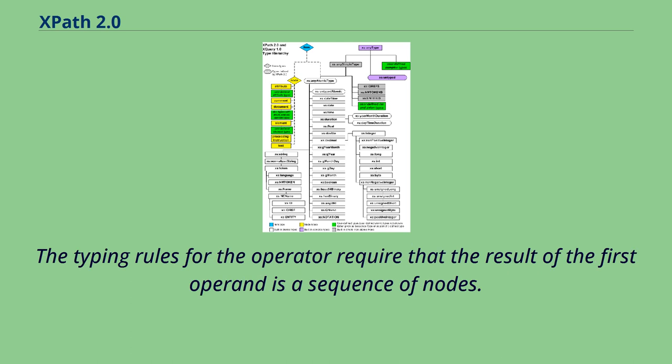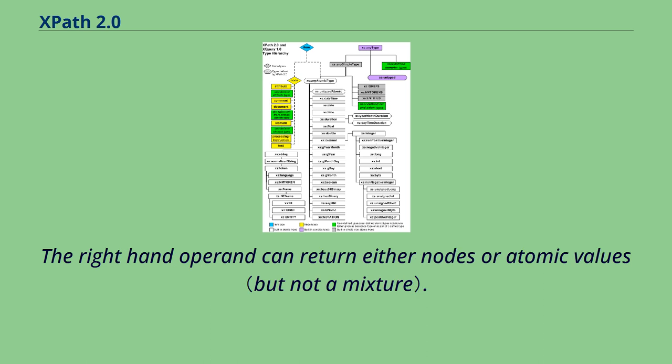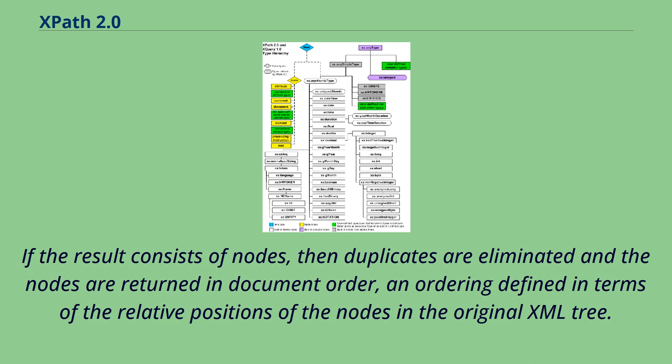The typing rules for the slash operator require that the result of the first operand is a sequence of nodes. The right-hand operand can return either nodes or atomic values. If the result consists of nodes, then duplicates are eliminated and the nodes are returned in document order, an ordering defined in terms of the relative positions of the nodes in the original XML tree.